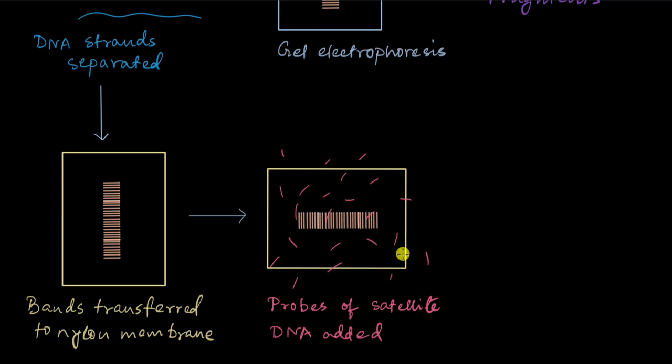What next? How can we see them? Well, the probes that we have used in this stage are all radioactive. So, then once the probes have bound, we will wash off the solution of the probes. So, only the probes that have stuck to the bands will remain.